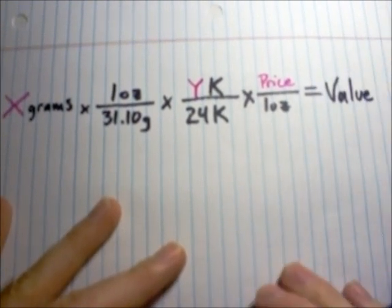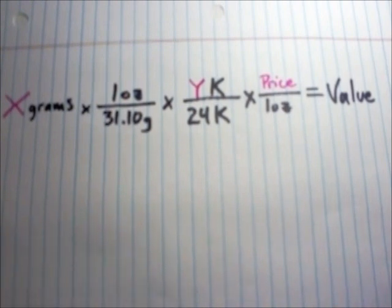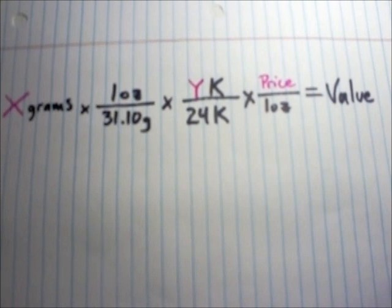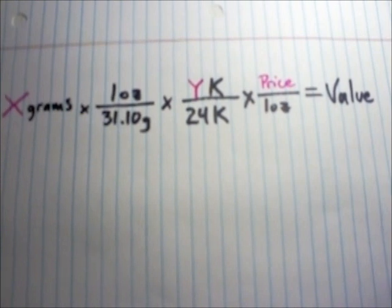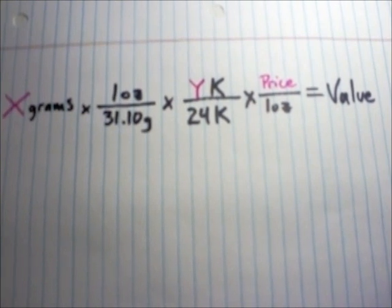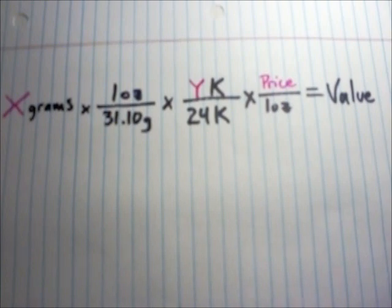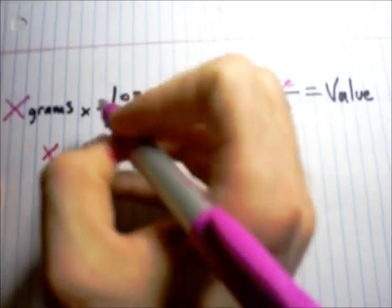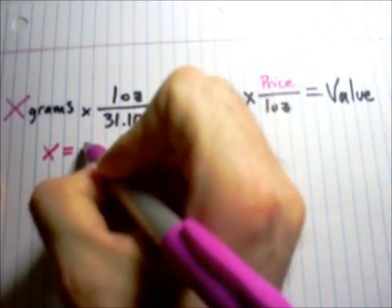All right, so it's really that simple. So, here's what we're going to do. We're going to pretend that I have five grams of a 14 carat gold ring. And we'll use today's spot price. So, here we're going to say, we'll say we have x equals five grams.